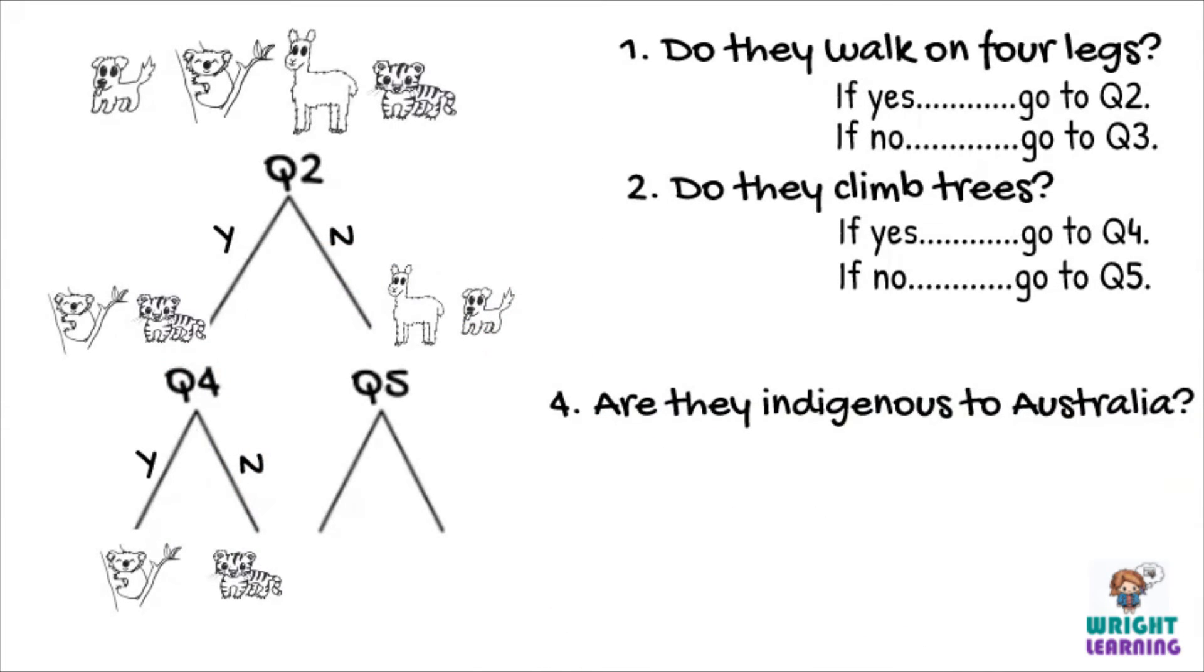So this time for our written dichotomous key, we can write, if yes, koala. If no, tiger.